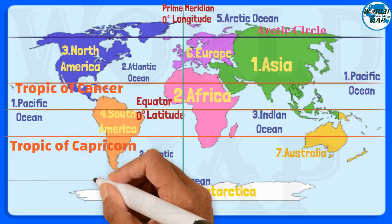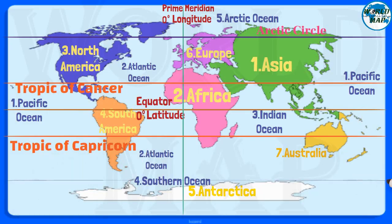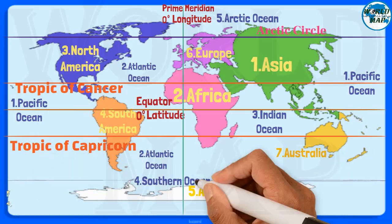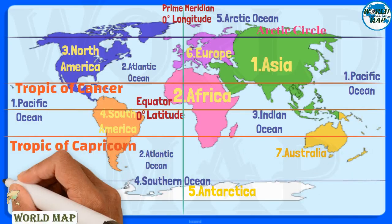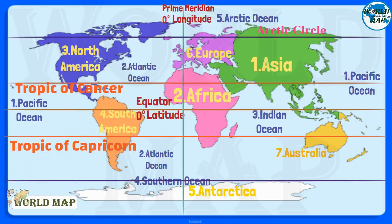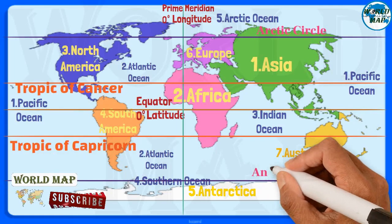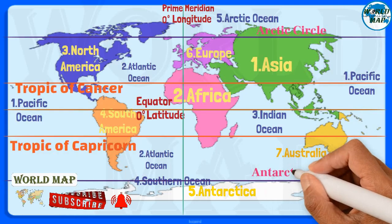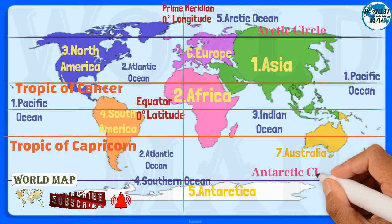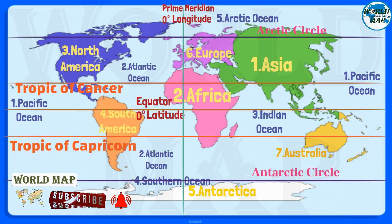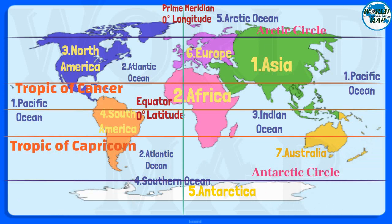Antarctic Circle. The Antarctic Circle is the most southerly of the five major circles of latitude that mark maps of Earth. The region south of this circle is known as the Antarctic, and the zone immediately to the north is called the Southern Temperate Zone.